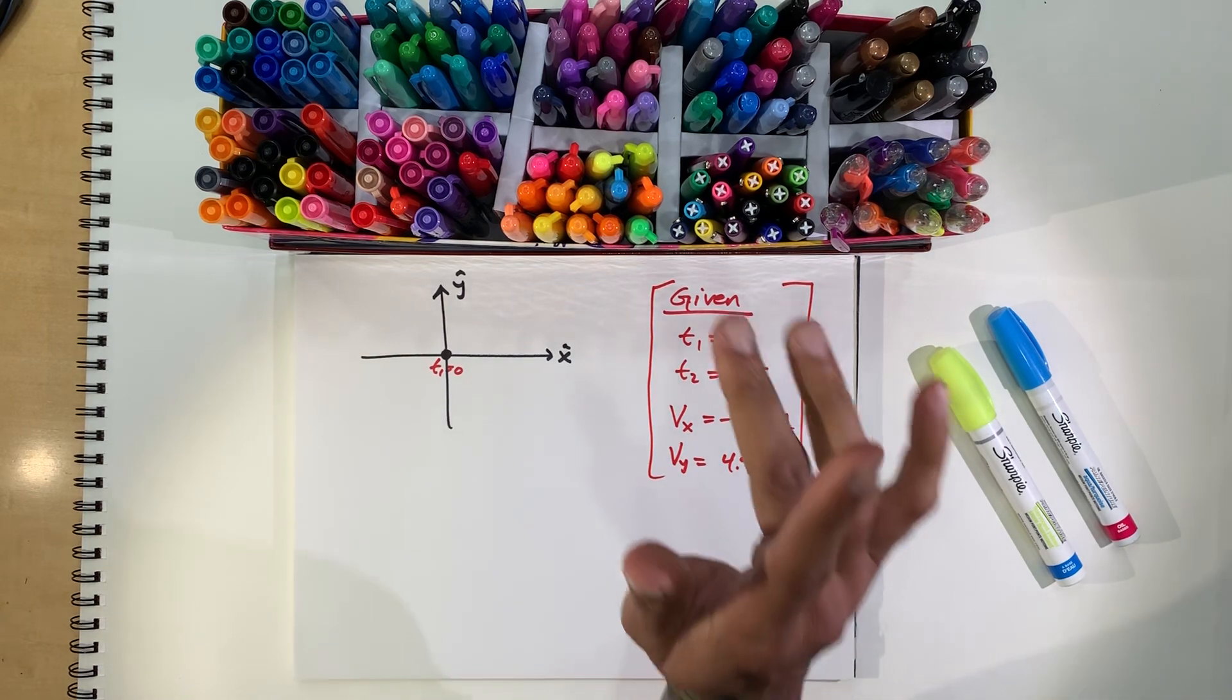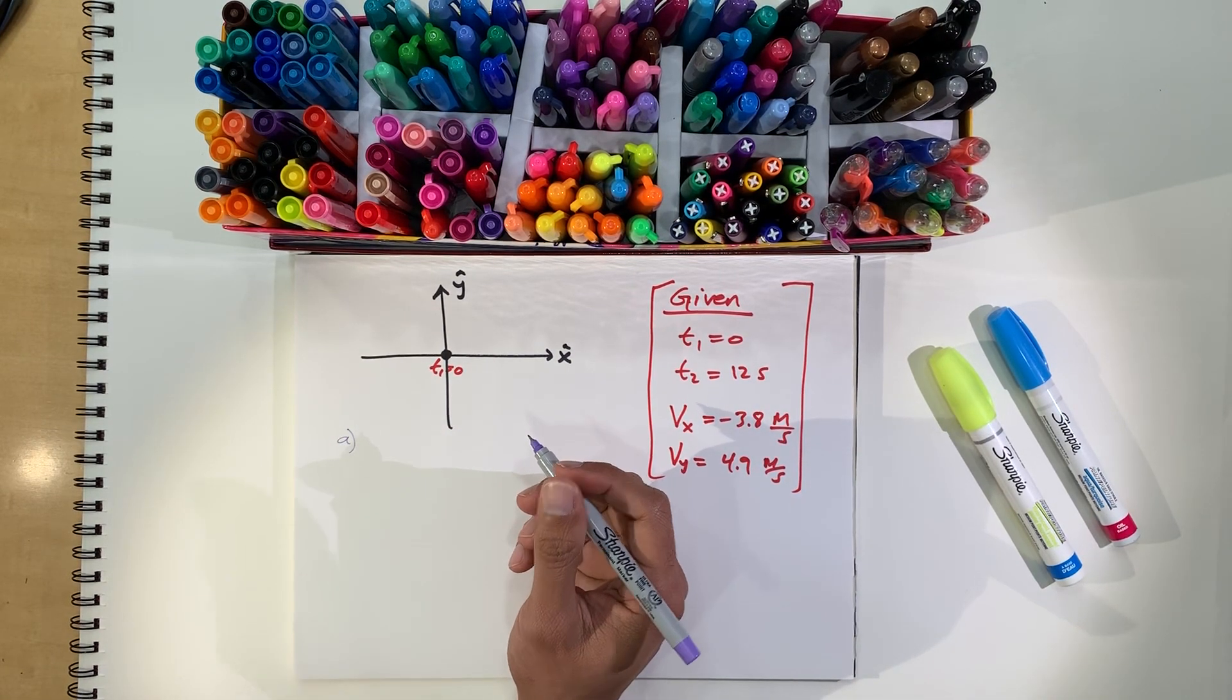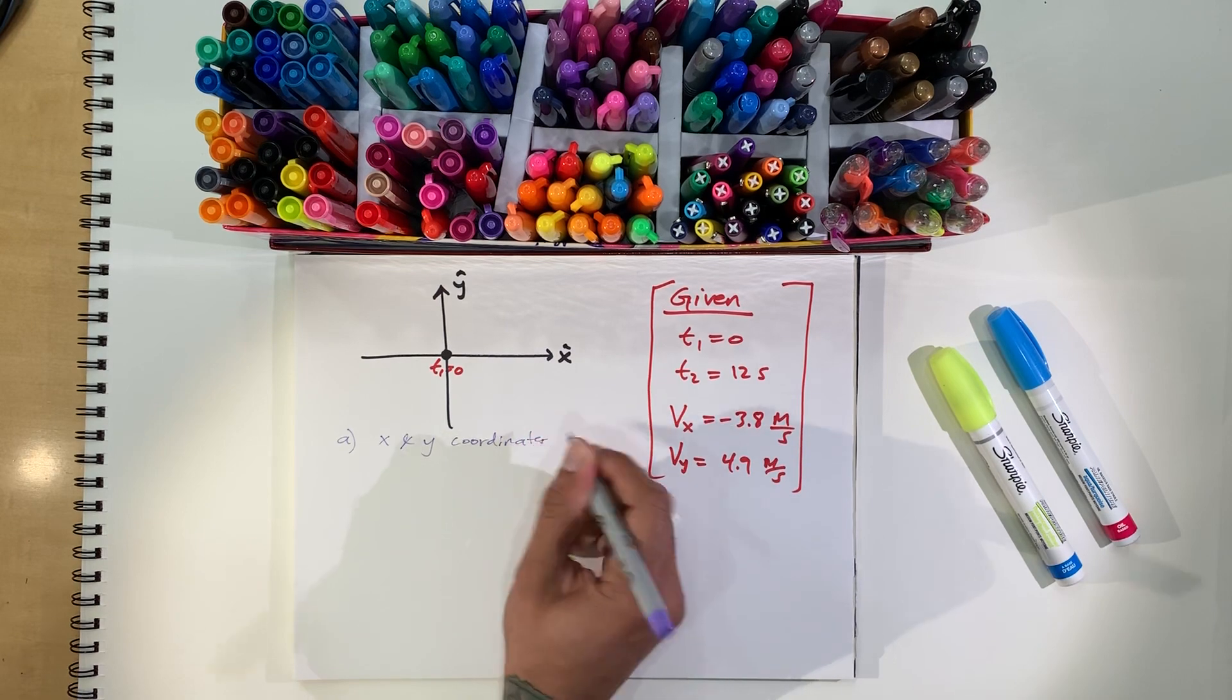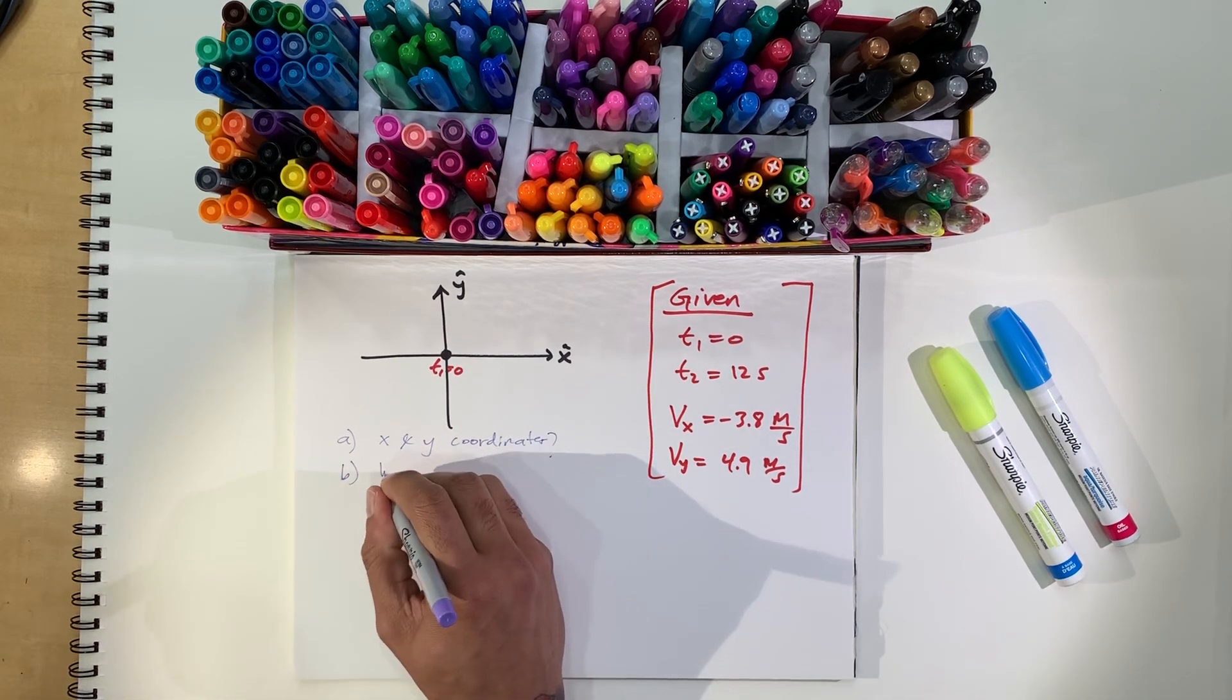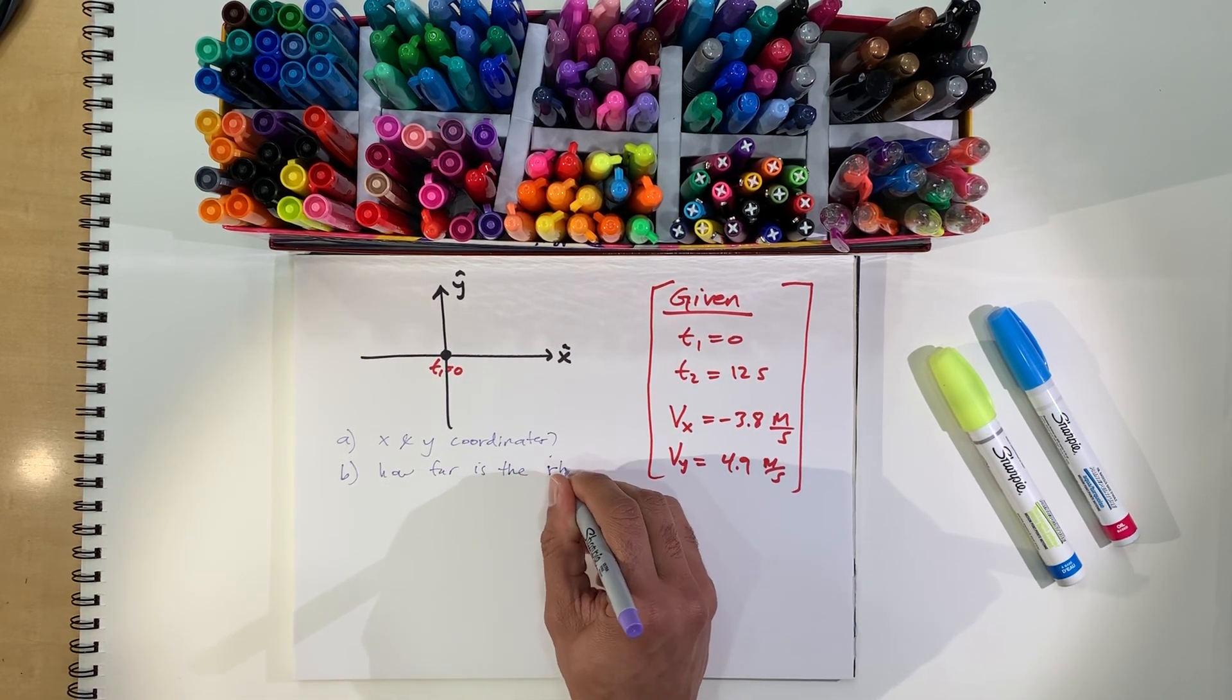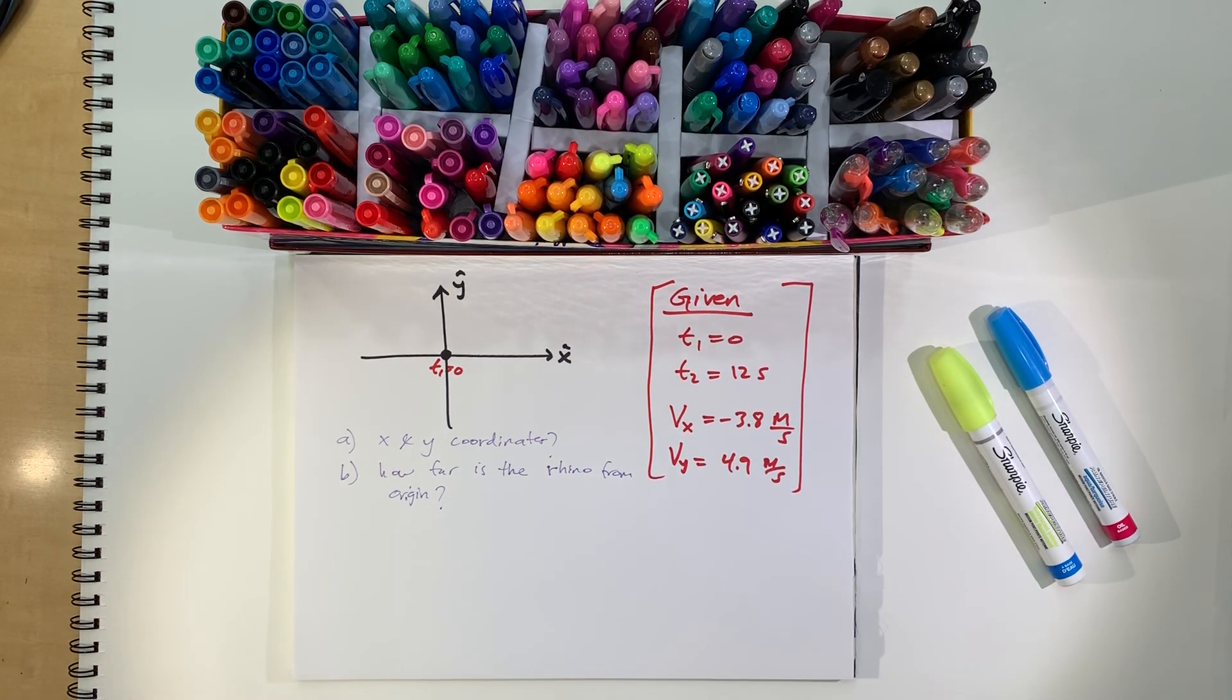All right, so the question. So, we got here A, what are the x and y coordinates of the rhino? So, the x and y coordinates of the rhino. And then B, how far is the rhino from the origin? So, let's just write it down. How far is the rhino from the origin?